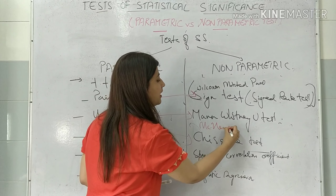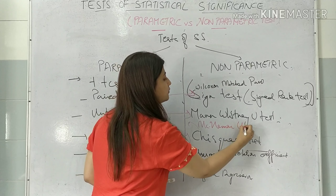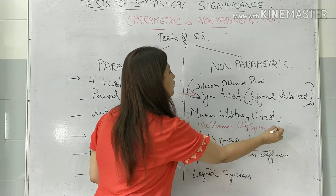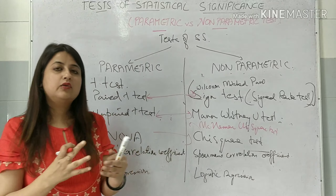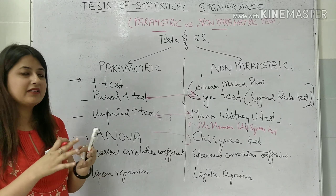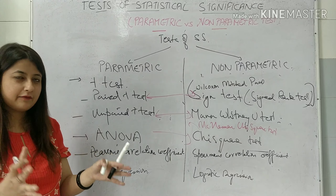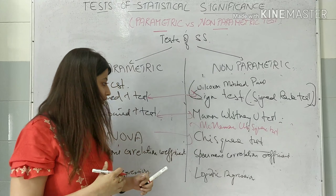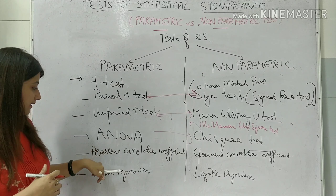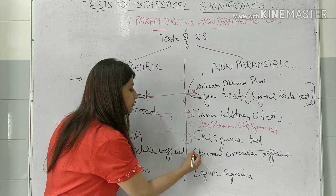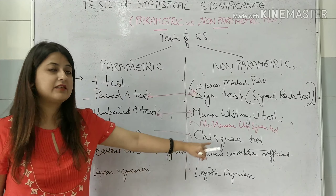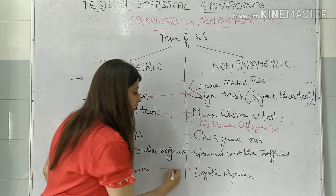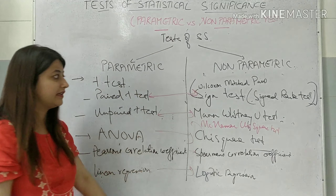McNemar's chi-square test — this is quite high-level, and even if you forget it, it will be fine. Pearson's correlation coefficient has a counterpart in Spearman's correlation coefficient, and linear regression has a counterpart in logistic regression.